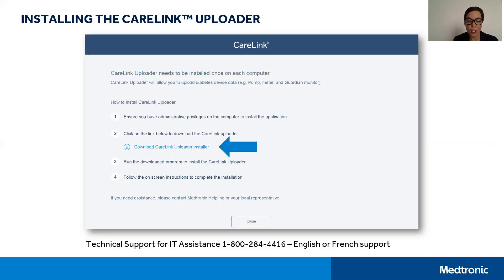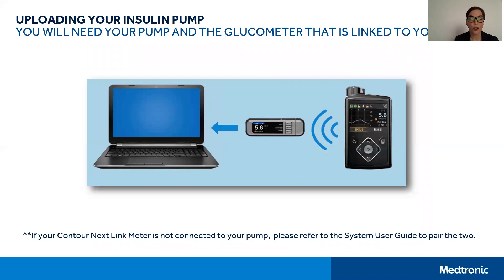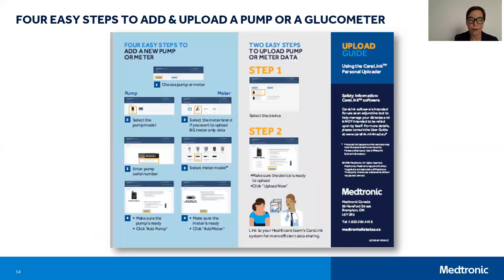When the program has finished installing the uploader, you are now ready to upload your pump. Click on Upload Device. You're going to need your glucometer that is linked to your pump. If your Contour Next Link meter is not connected to your pump, please refer to the system user guide in order to pair the two. You can check if they're connected in your utilities menu. I'll also refer you to our upload guide, which I suggested you download previously.